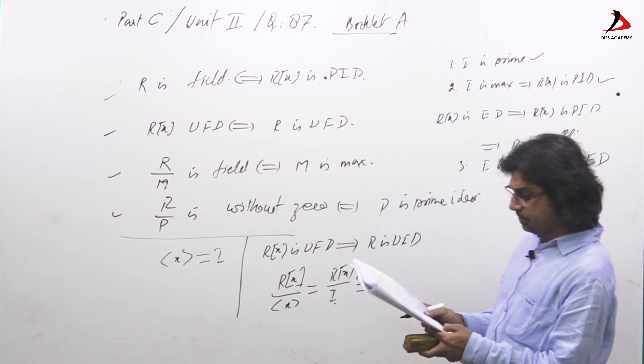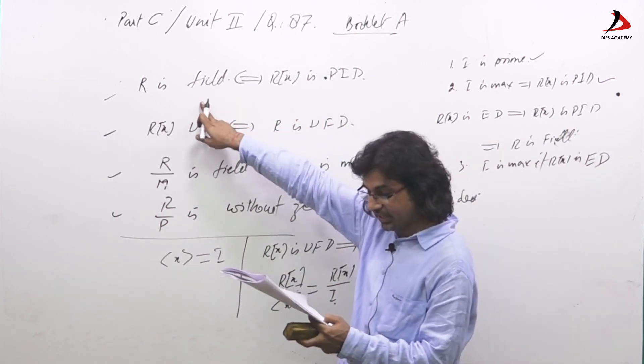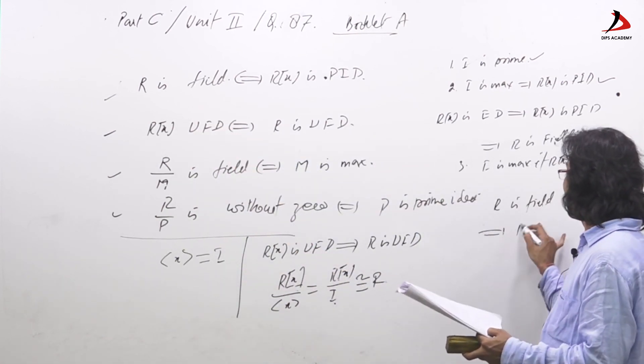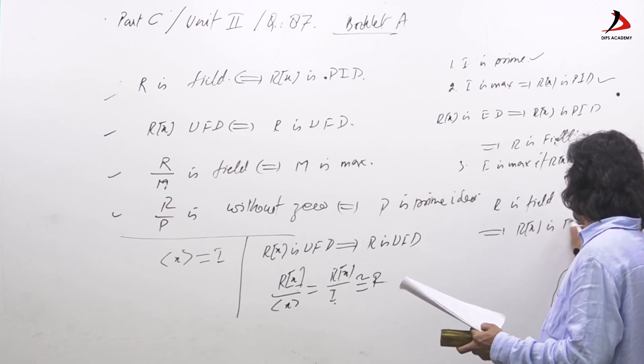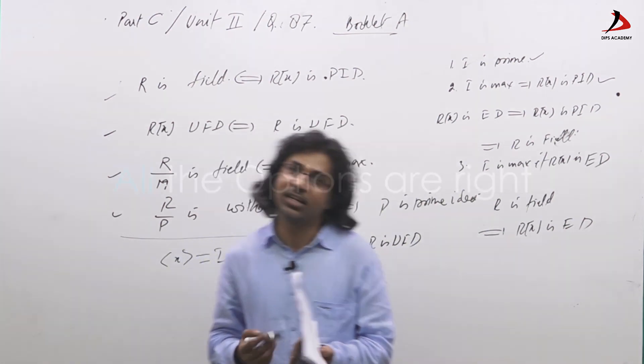Fourth, again Rx is PID, since Rx is PID implies R is field and when R is field, if R is field implies Rx is ED. So this option is also correct. So for this question, all the four options are correct.